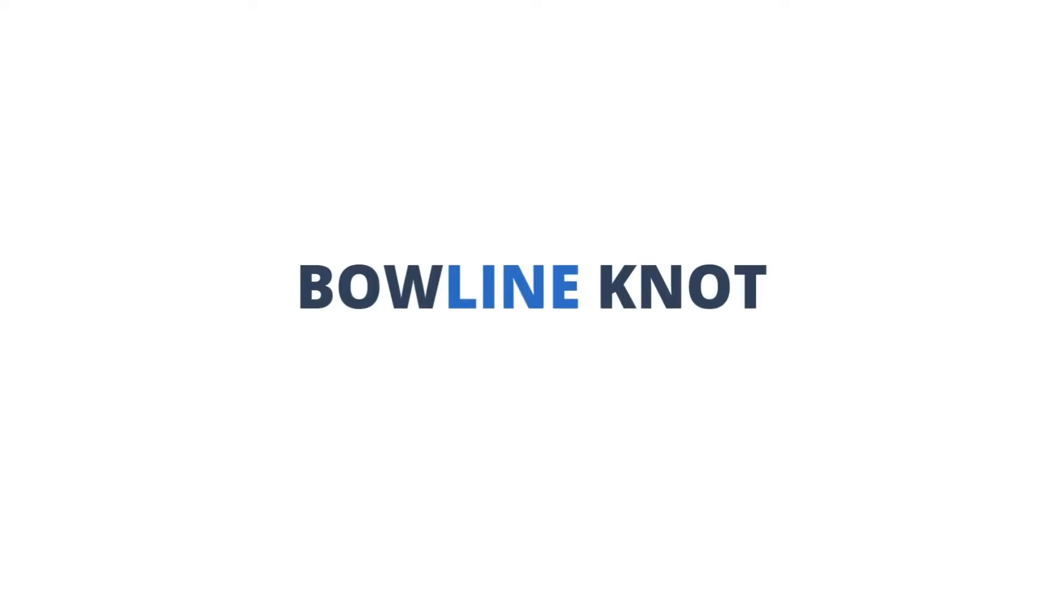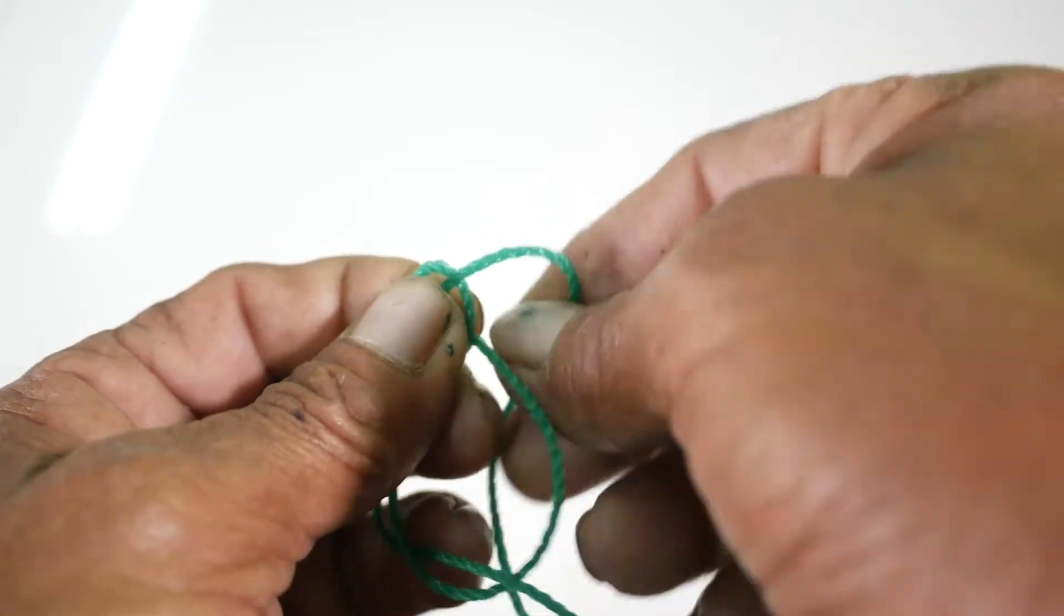The bowline knot is a simple and stable knot to create a fixed loop and attach a rope to an object.